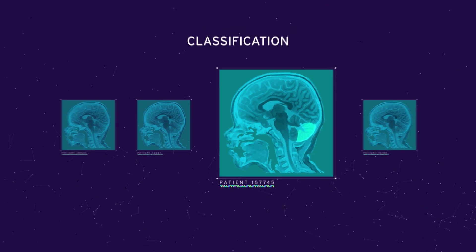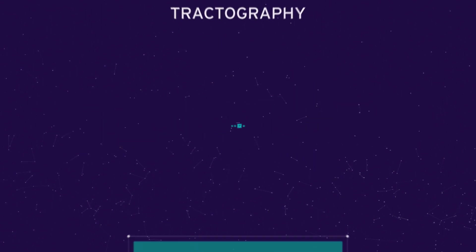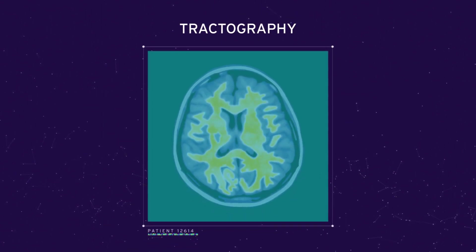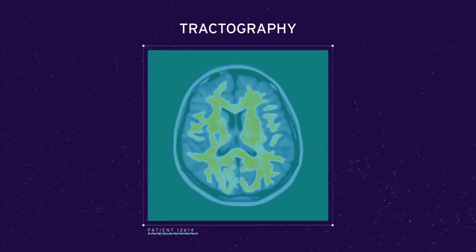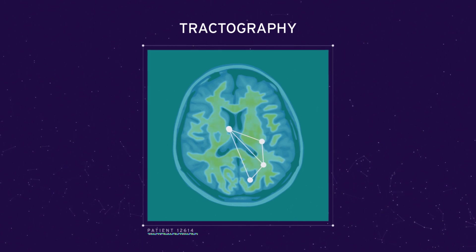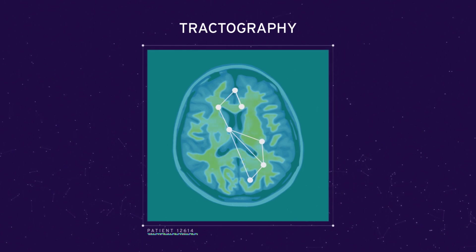The last type is tractography. You might have a case where you want to map how signals flow through the brain, and to be able to do that mapping would be a tractography problem of tracking flow from one end to the other.